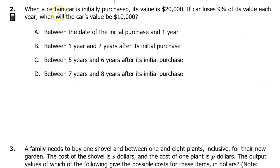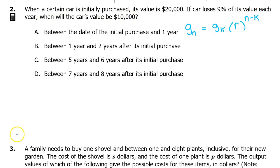Number 2. When a certain car is initially purchased, its value is $20,000. If the car loses 9% of its value each year, when will the car's value be $10,000? We have learned that a geometric sequence can be modeled by Gn equals Gk times r to the n minus k power, where Gn is the nth term, Gk is term k, and r is the common ratio.